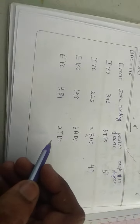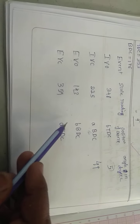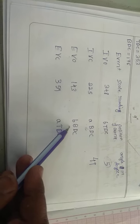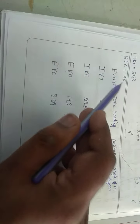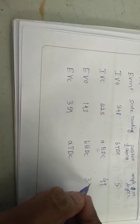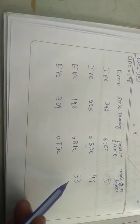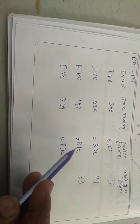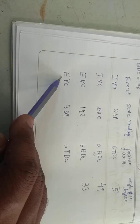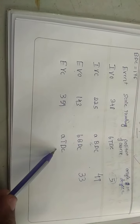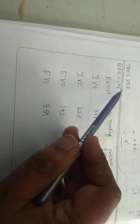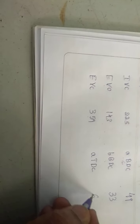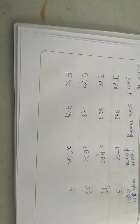Next is exhaust valve opening — it occurs before bottom dead center. To find that angle: 176 minus 143 equals 33 degrees. So the exhaust valve opens 33 degrees before bottom dead center. Then for exhaust valve closing, it is with respect to TDC: 359 minus 353 equals 6 degrees. So the exhaust valve closes 6 degrees after top dead center.